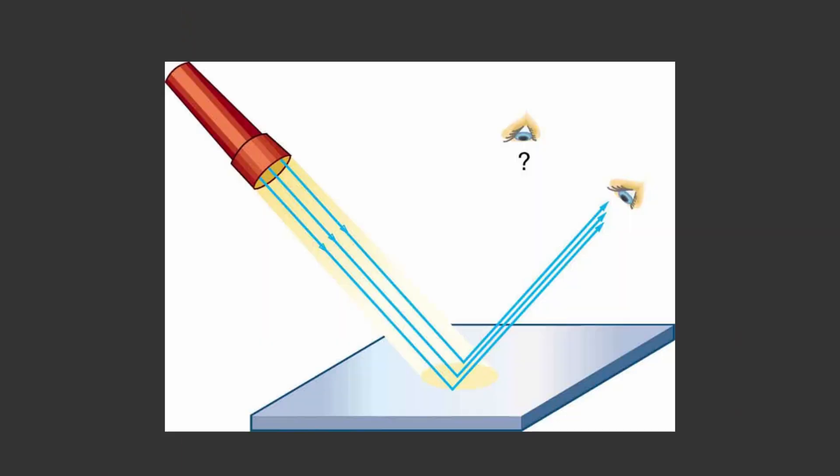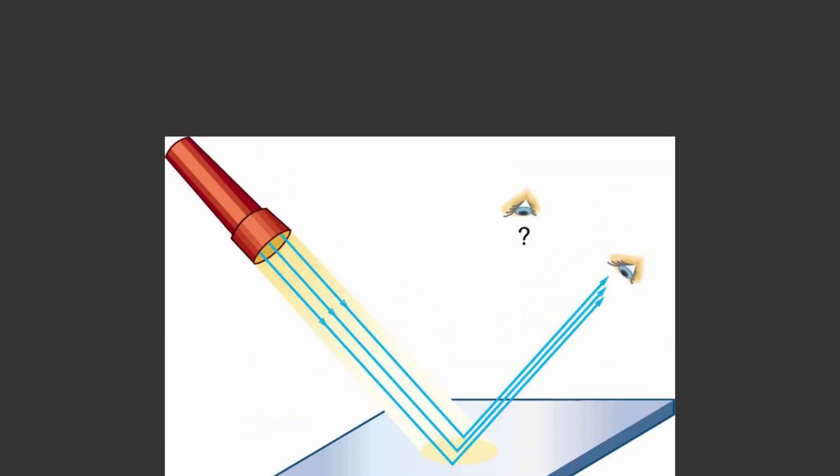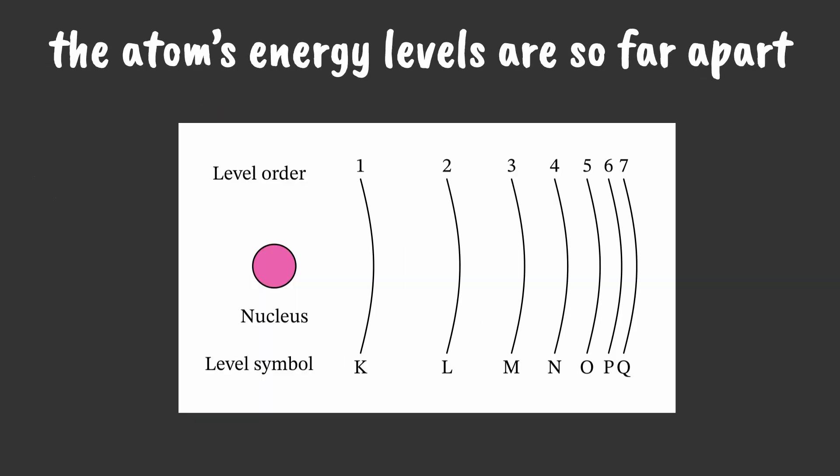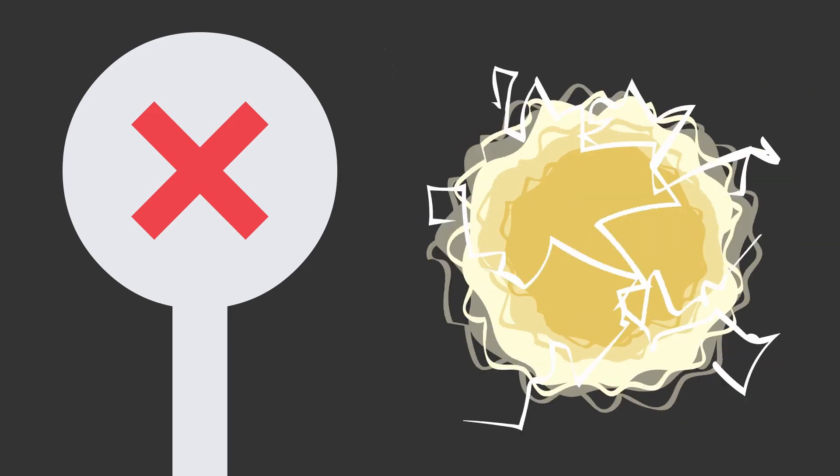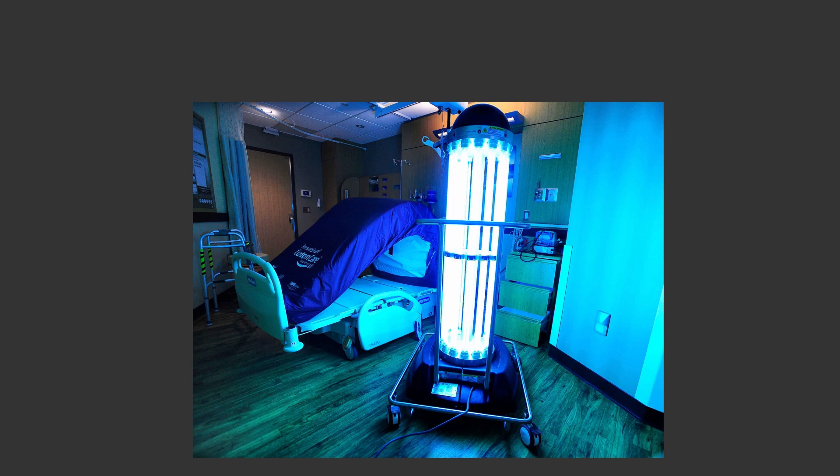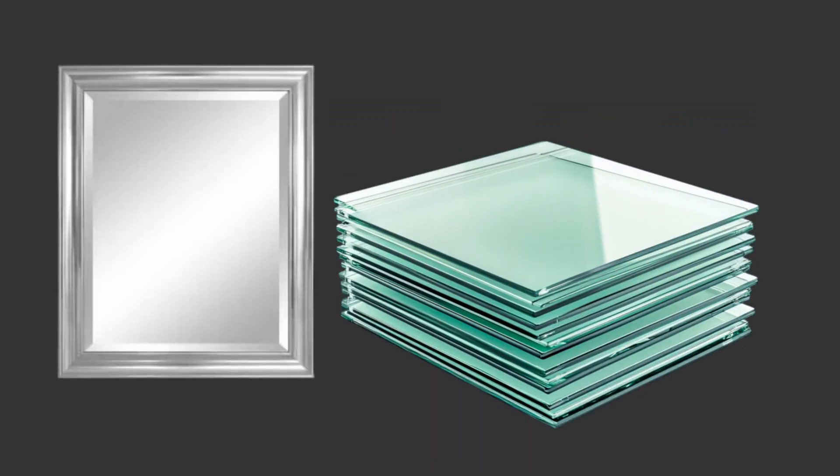As you can probably guess, this is what tends to happen in glass. In glass, the atom's energy levels are so far apart that the photons in visible light don't carry enough energy to excite the electrons and get absorbed. Only photons with higher energy, like those in UV light, are able to be absorbed.